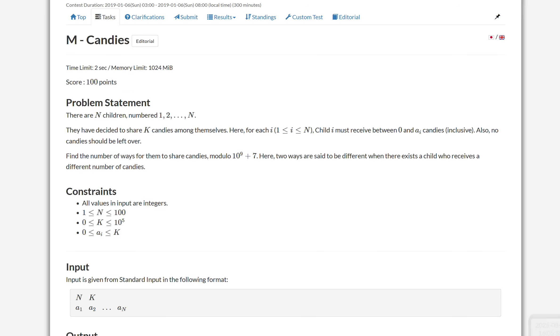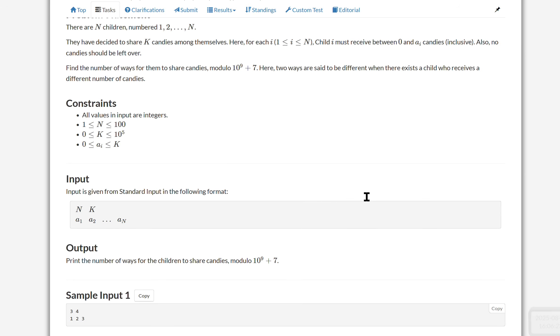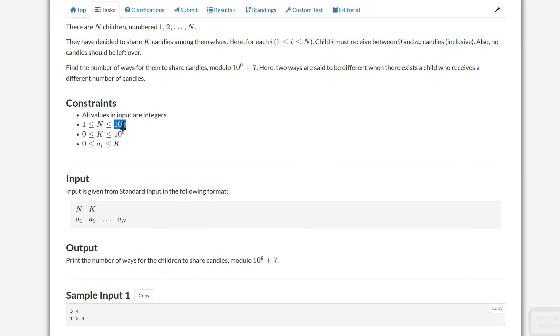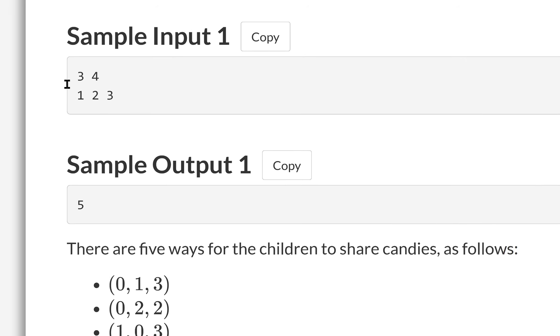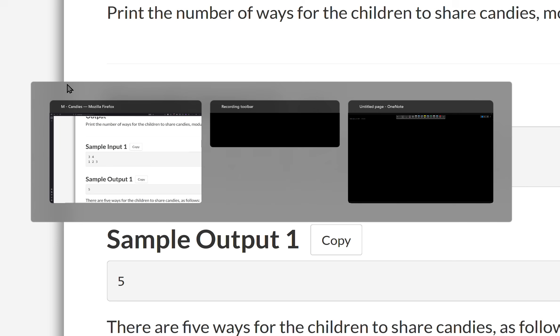This is the editorial for candies on the AdCoder DP contest. Let's look at the problem first. We have N children. They must distribute or share K candies between each other. Each child has to receive at most AI candies, and you have to use up all of the candies. You have to find the number of ways for them to share candies modulo 10 to the 9 plus 7. As you can see, N is very small at 100 and K is 10 to the 5. Let's look at the first example here and work through it.